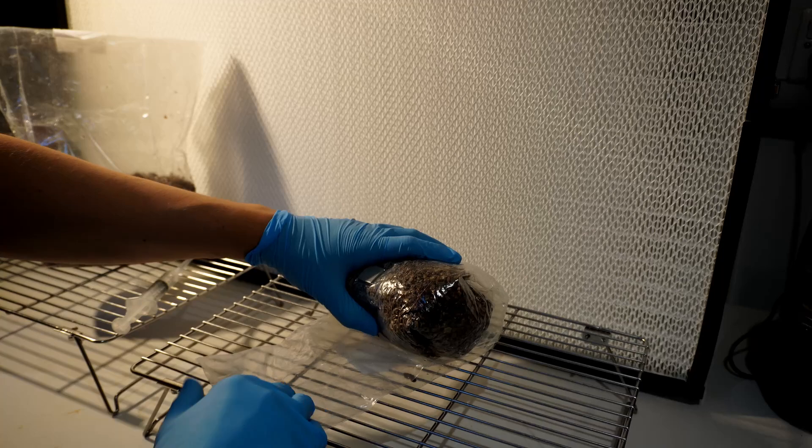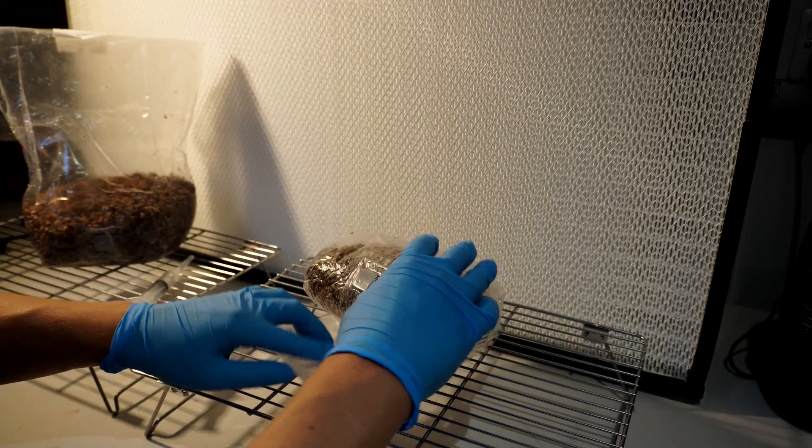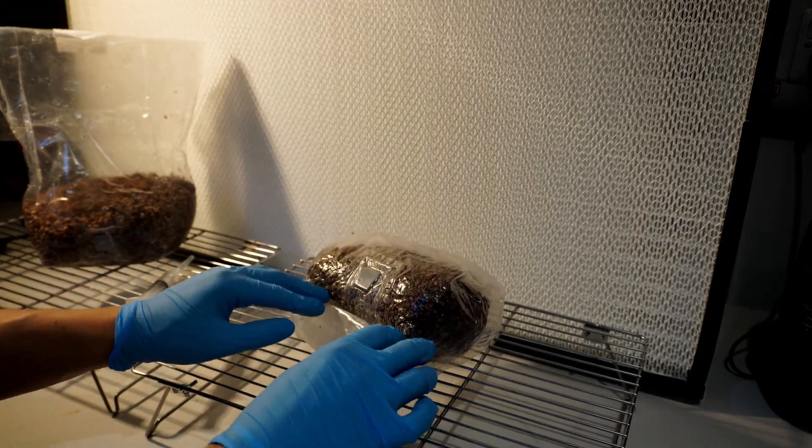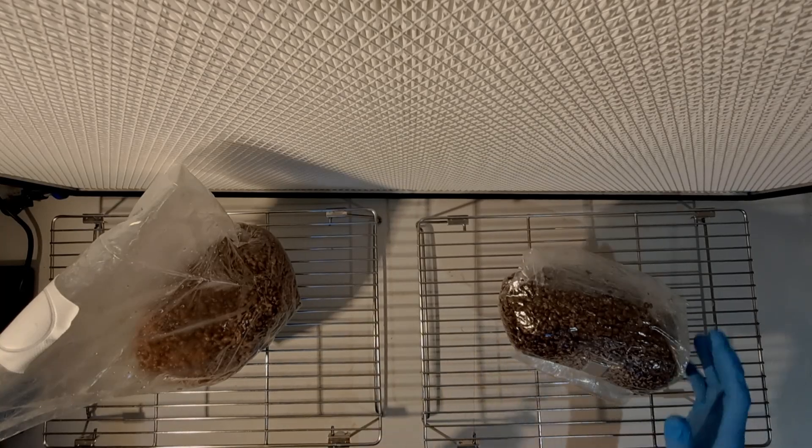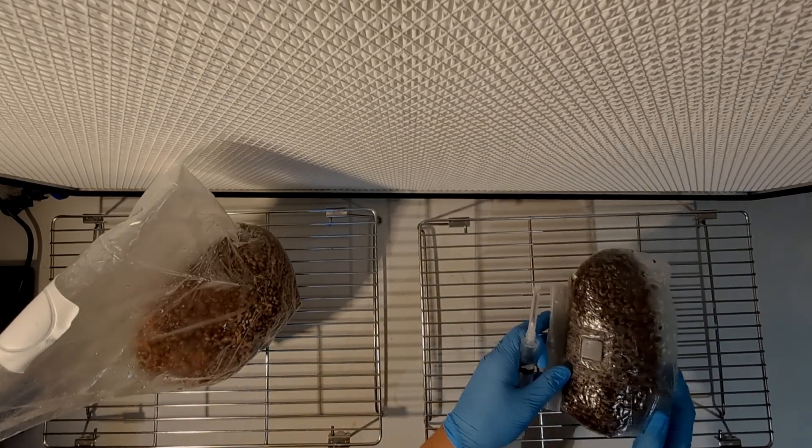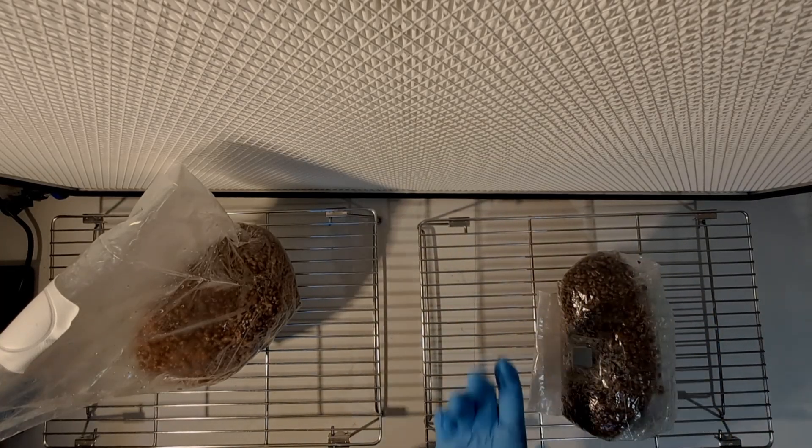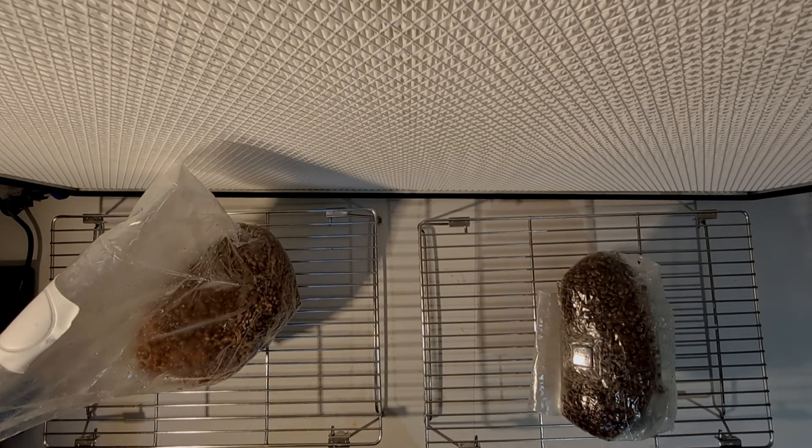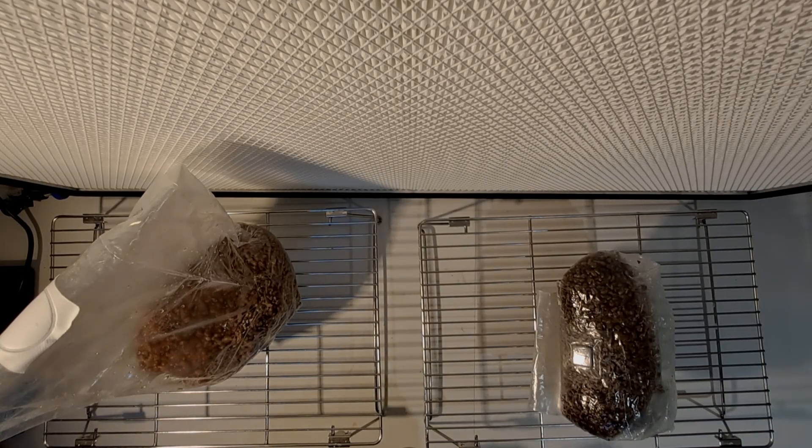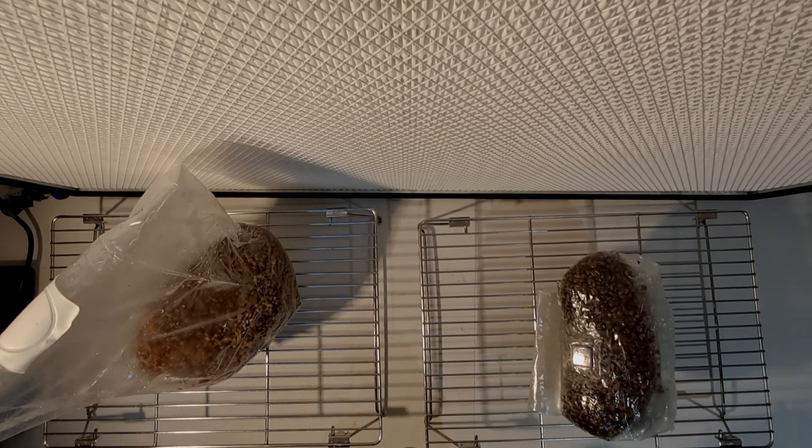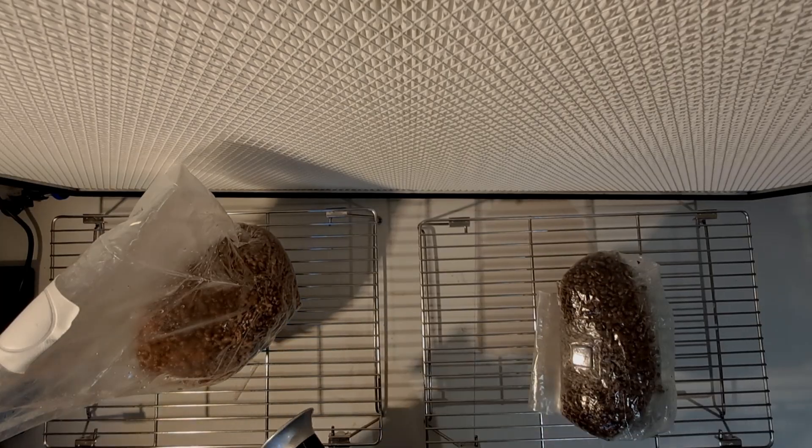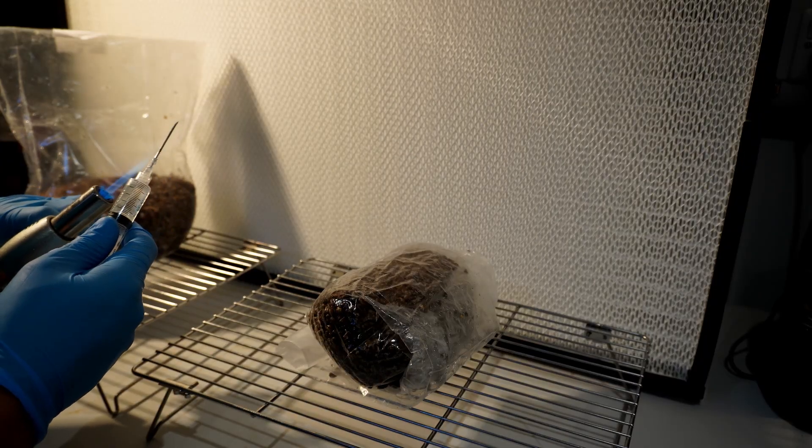We're going to create a little burrito here making as little surface area as possible, make sure the grains are nice and tight, and you can see just positioning the injection port into the airflow where it's not being obstructed. Flame sterilize the syringe and inject.